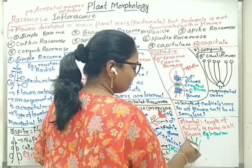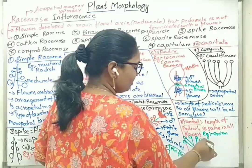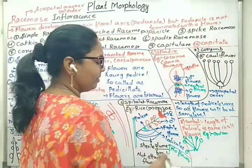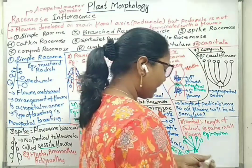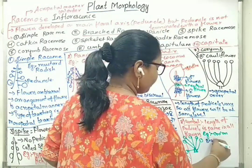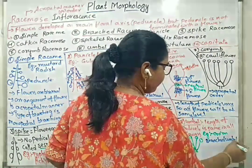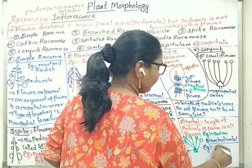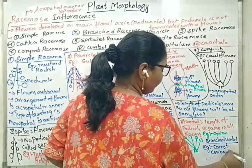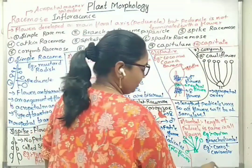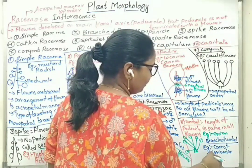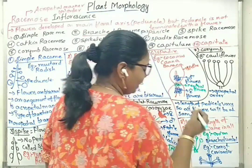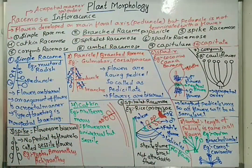All pedicels will have the same length, so the level of flowers is not the same — unlike corymb where all reach the same level. These are examples from simple raceme up to umbel.